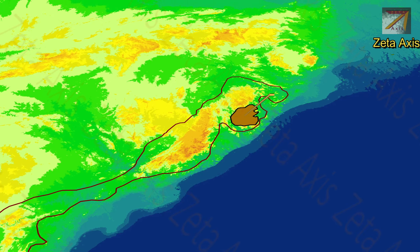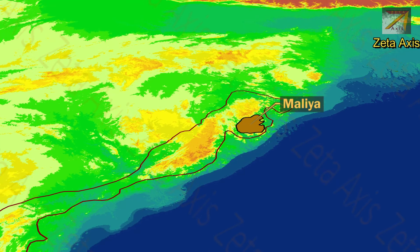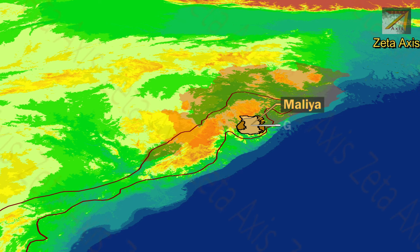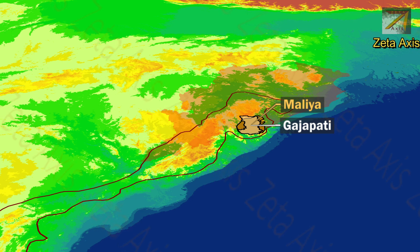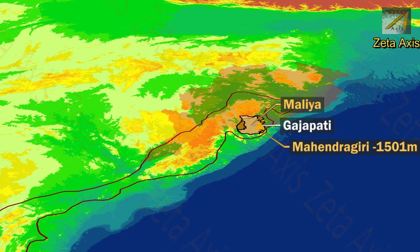Let's start with the Malia range, which is located in the northern portion of the Eastern Ghats. The Malia range is mainly found in Gajapati district of Odisha, generally ranging between elevations of 900 to 1200 meters. The tallest peak in this range is Mahendragiri, which is 1500 meters high.